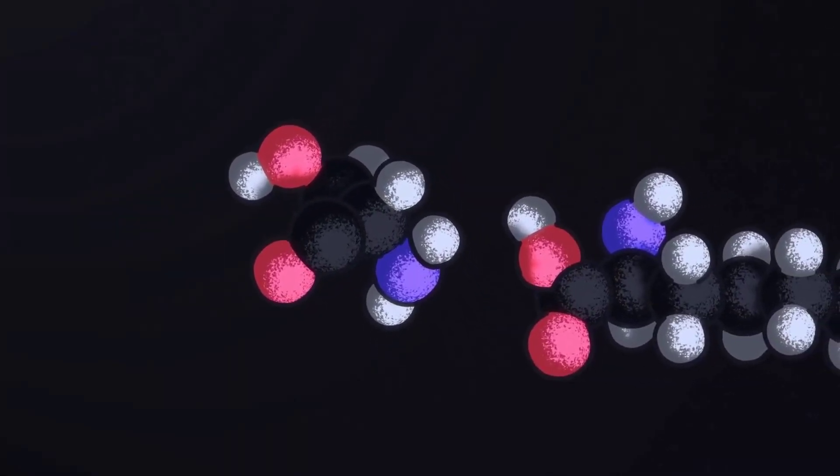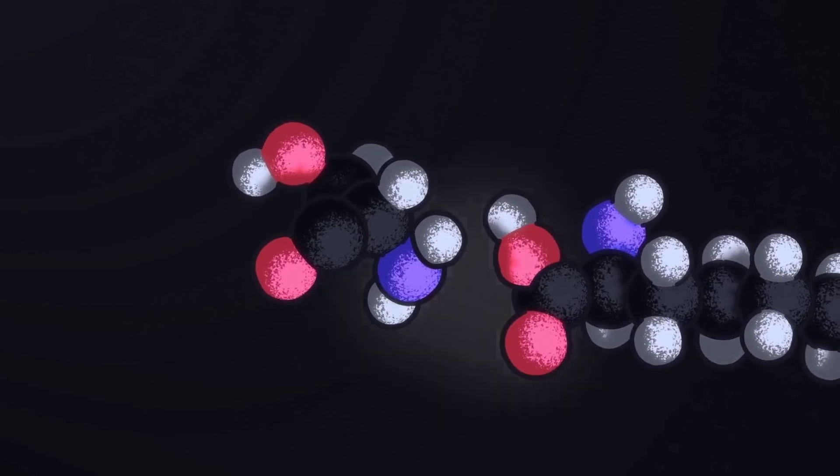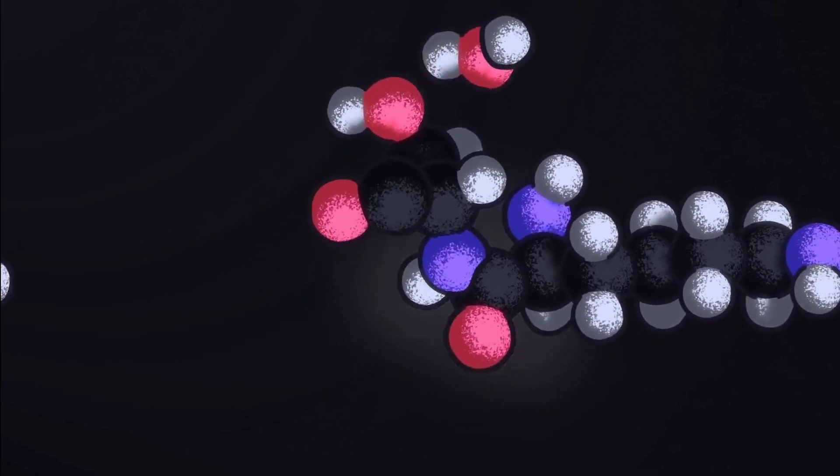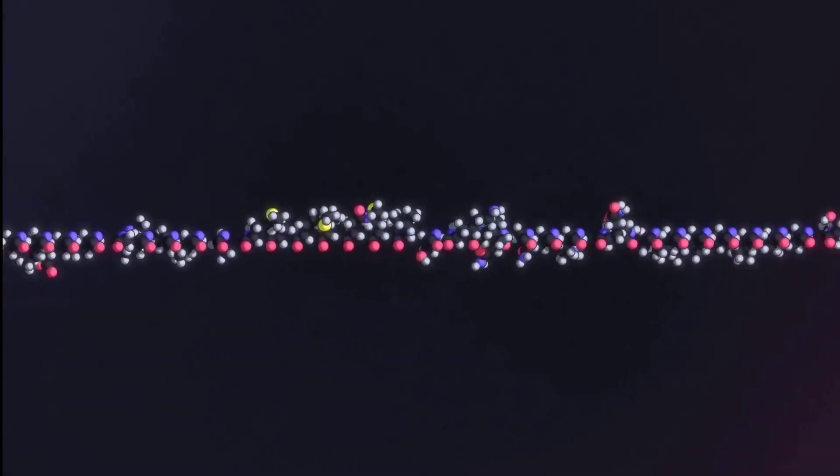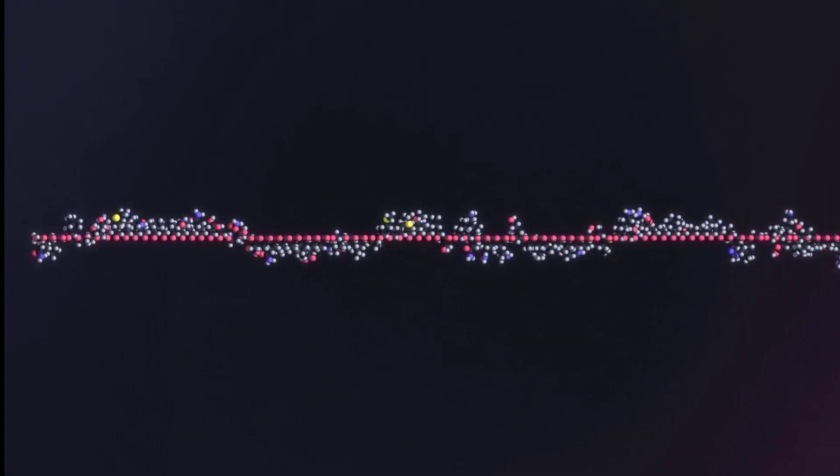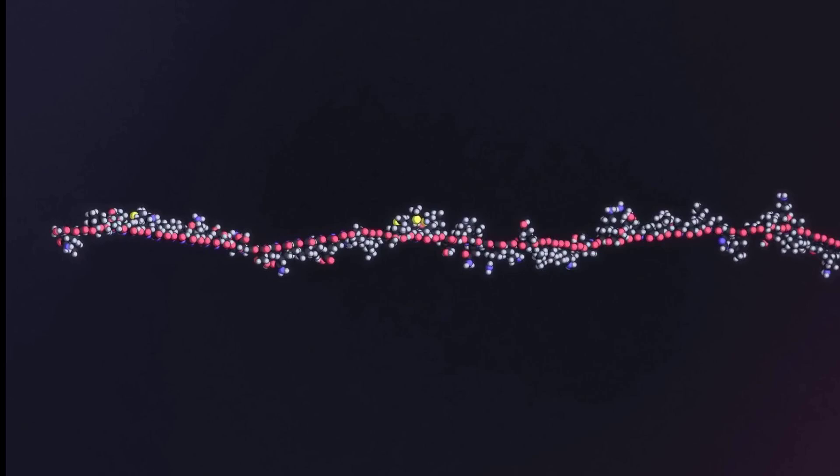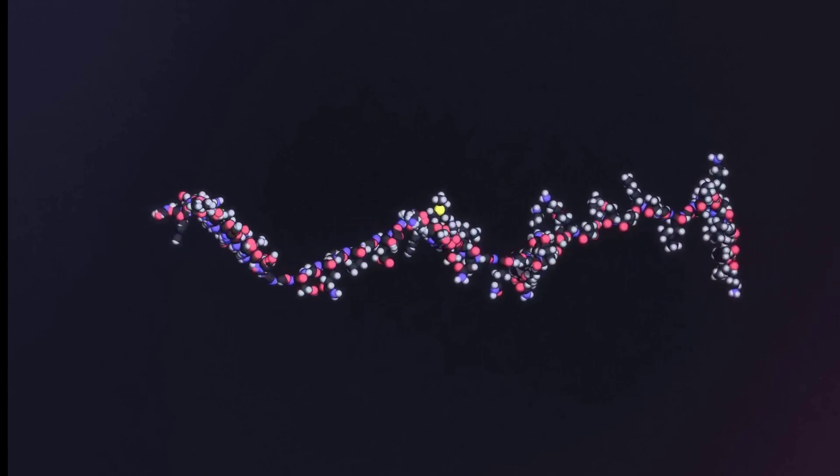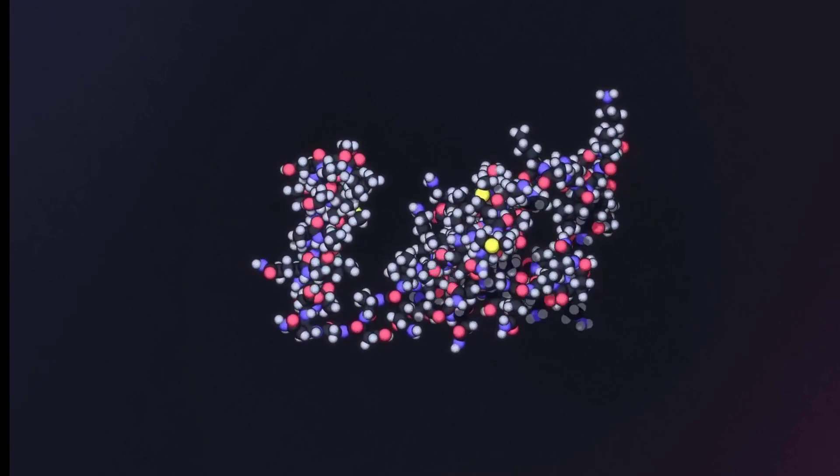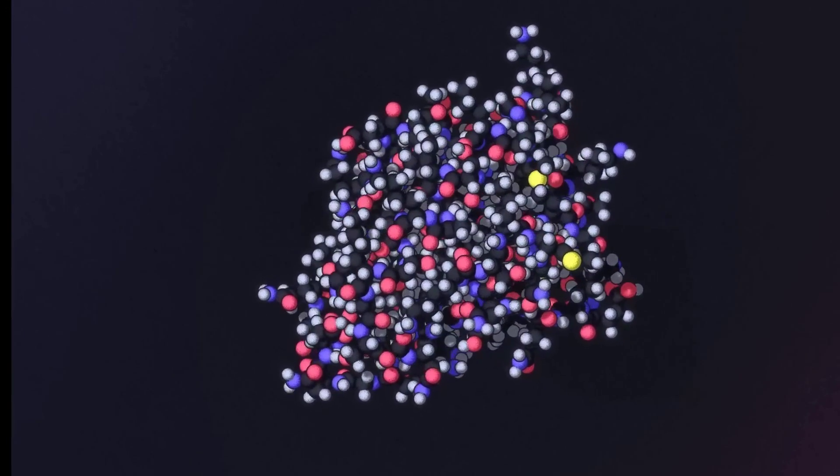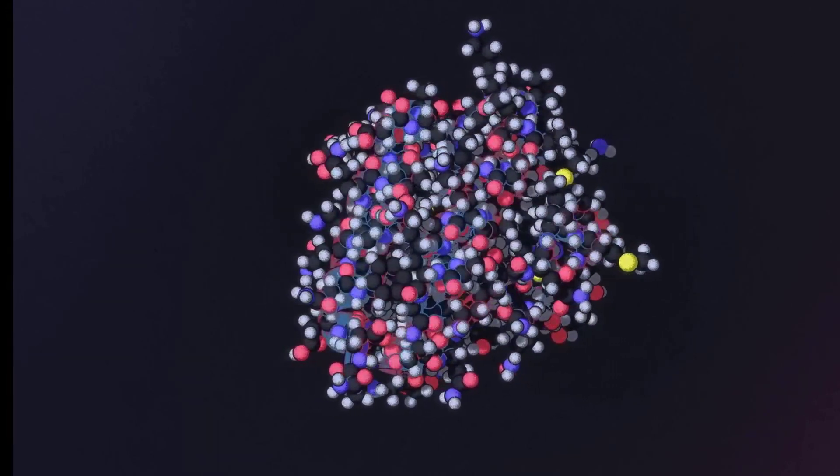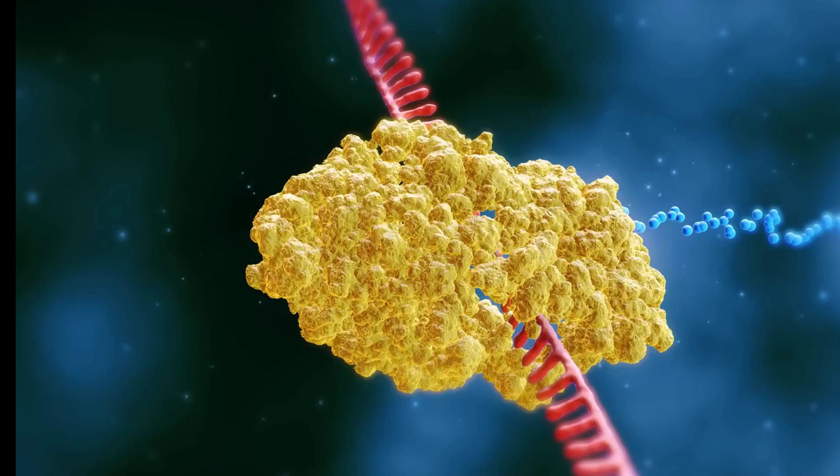Protein folding is a classic example of a high-dimensional optimization task. You're mapping from a primary sequence, a 1D chain of amino acids, to a 3D energy-minimized structure. The conformational space is astronomical. This problem was once declared intractable without brute force physics simulations.